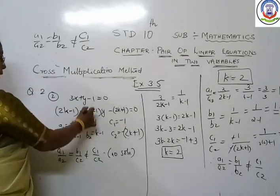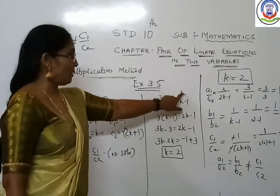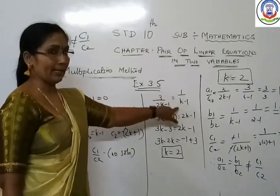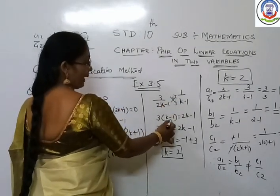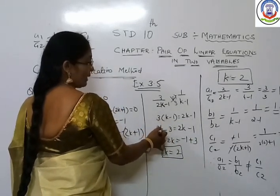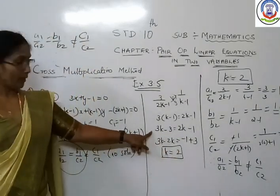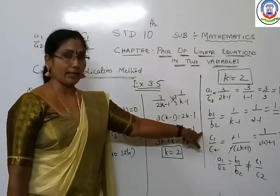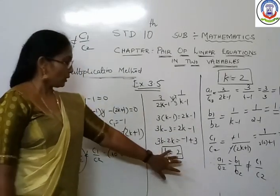Since the equation is given to have no solution, the condition is a1/a2 = b1/b2 ≠ c1/c2. Equate a1/a2 = b1/b2: 3/(2k−1) = 1/(k−1). Cross multiply: 3(k−1) = 2k−1, so 3k − 3 = 2k − 1. Therefore 3k − 2k = −1 + 3, giving k = 2.